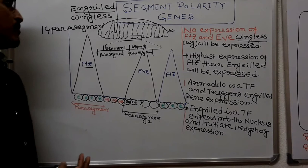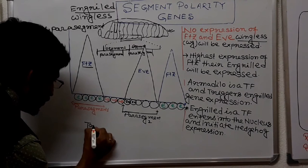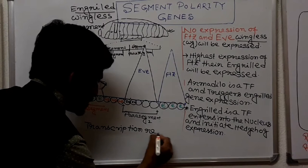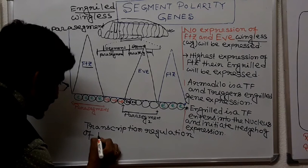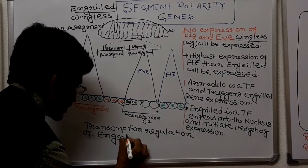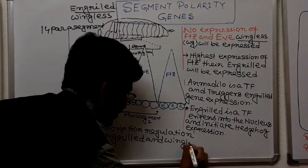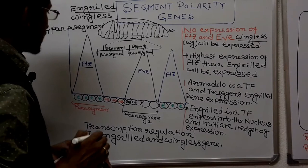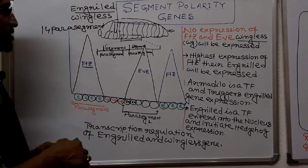Today we will learn about the transcription regulation of engrailed and wingless genes. Looking at the diagram, the x-axis shows para segment 1, para segment 2, para segment 3, and so on. First, let's consider where the highest expression occurs.